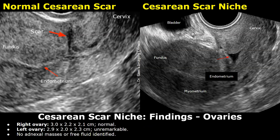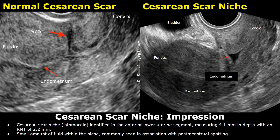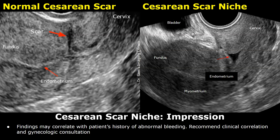The ovaries are normal. Impression: cesarean scar niche, also called an isthmocele, identified in the anterior lower uterine segment, measuring 4.1 mm in depth with an RMT of 2.2 mm. Small amount of fluid within the niche. Commonly seen in association with postmenstrual spotting. Findings may correlate with patient's history of abnormal bleeding. Recommend clinical correlation and gynecologic consultation.